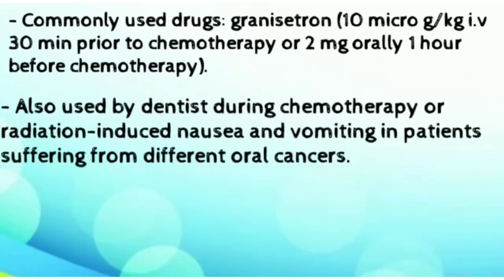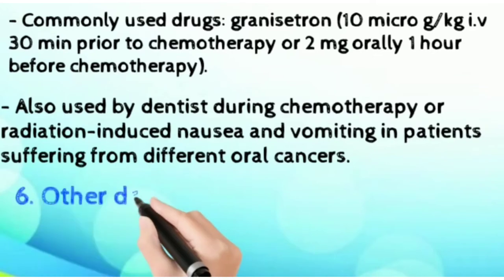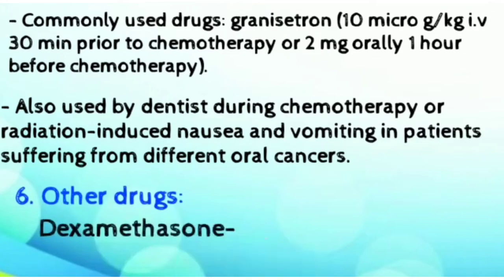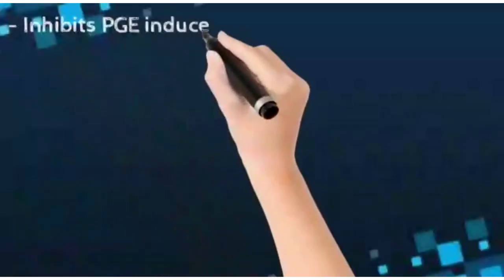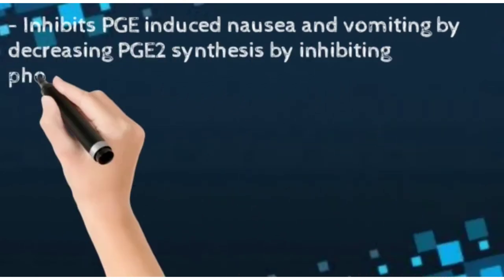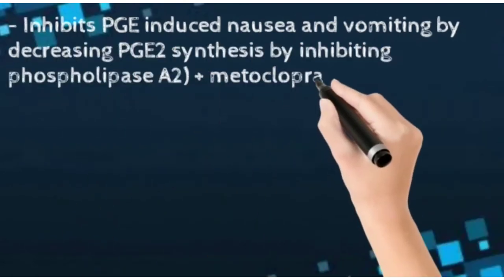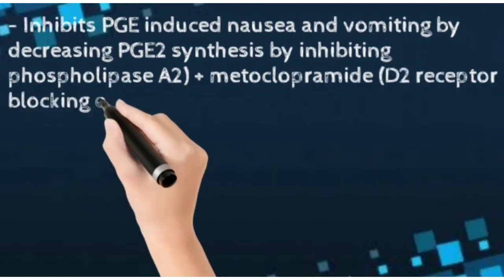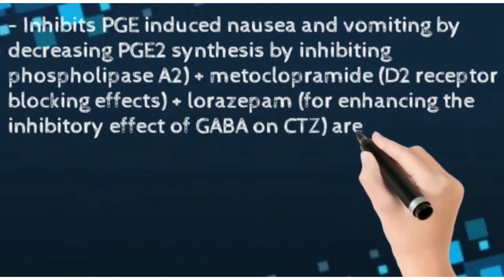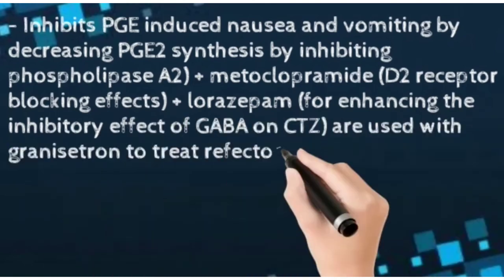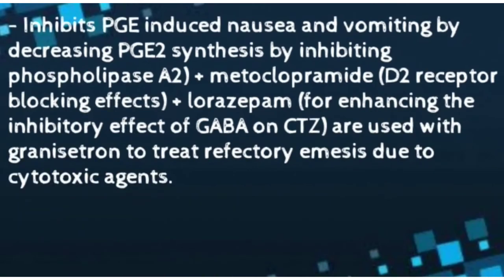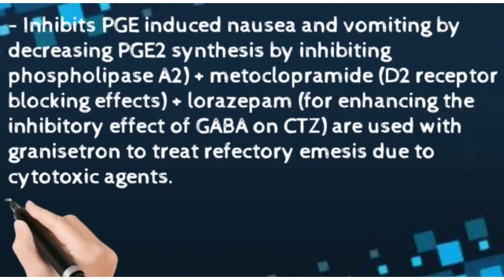Dexamethasone inhibits PGE-induced nausea and vomiting by decreasing prostaglandin synthesis through inhibition of phospholipase A2. Metoclopramide also has D2 receptor blocking effects. Lorazepam is used with granisetron to treat refractory nausea and vomiting due to cytotoxic agents.